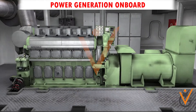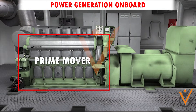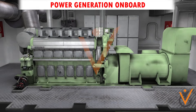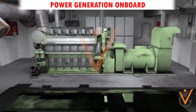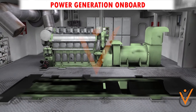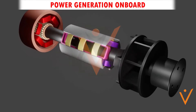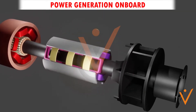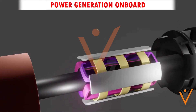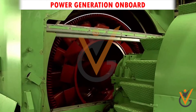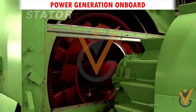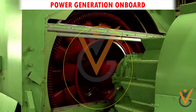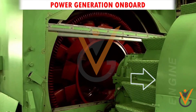Power generation on board a ship is achieved using a prime mover and an alternator working together. For this, an alternating current (AC) generator is used on board. The generator consists of a stationary set of conductors wound in coils on an iron core, known as the stator. The rotor is located between the stator, and the alternator is connected to an auxiliary engine.